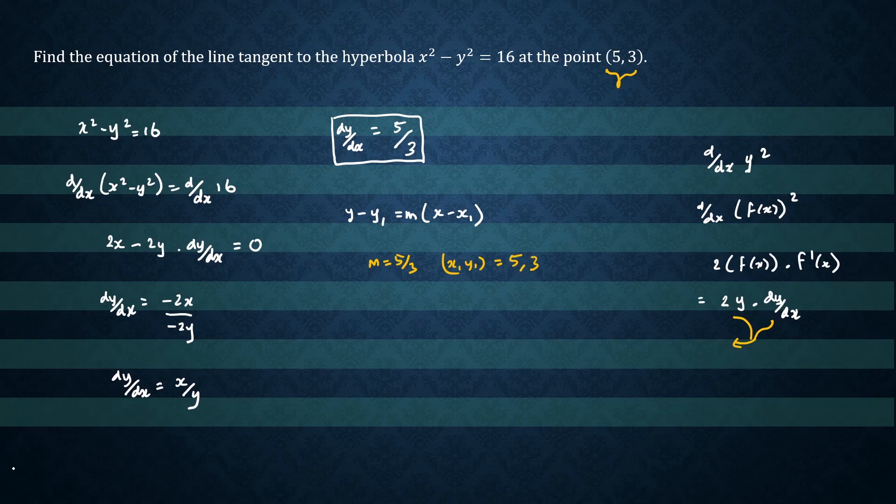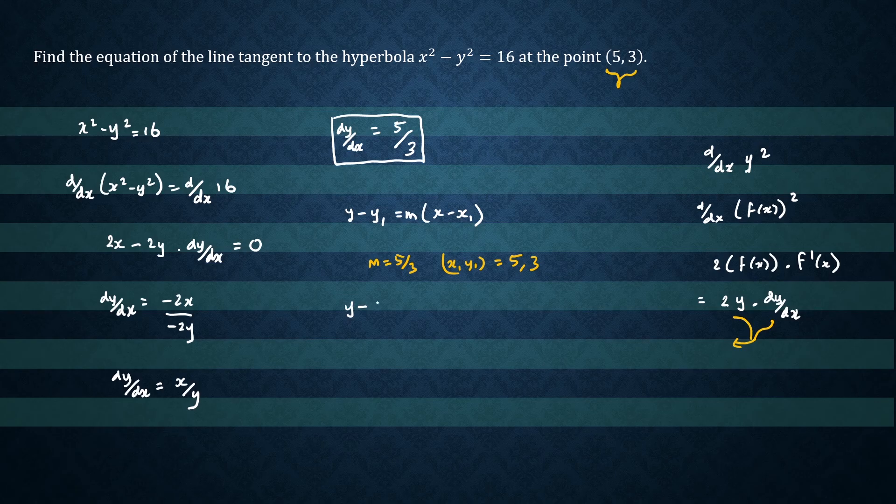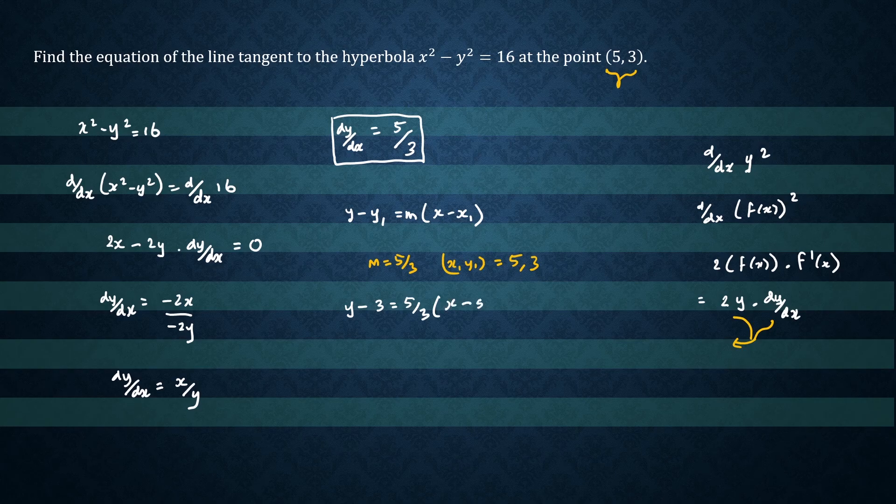So let's substitute them in. We'll have y minus y1, which is 3, equals the slope, which is 5 over 3, times x minus the x value, which is 5.